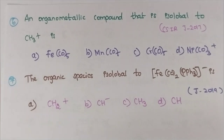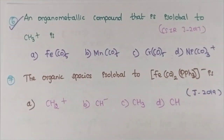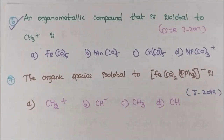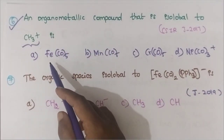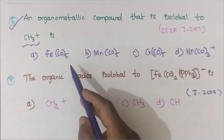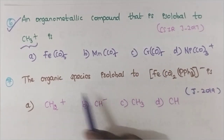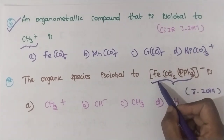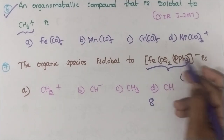The next two questions are for you to try. Question 6: find the organometallic compound isolobal with CH₃⁺. First find the valence electron count of CH₃⁺, then find which option matches. Please comment your answer. I'll solve the harder question: Fe(CO)₂(PPh₃)⁻. Iron has 8 valence electrons; two carbonyls donate 4; PPh₃ donates 2; and the negative charge adds 1 electron. So 8+4+2+1 = 15 electrons.